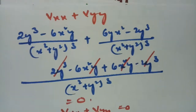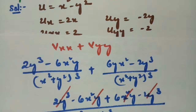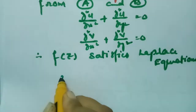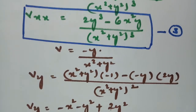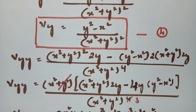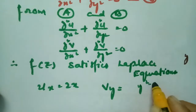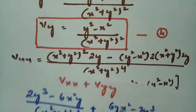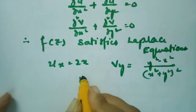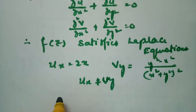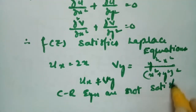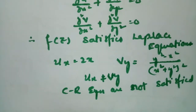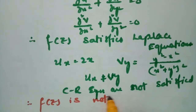Now we have to show that f(z) is not a regular function. For that, we check CR equations: ux should equal vy and uy should equal -vx. ux = 2x. But vy = (y² - x²) / (x² + y²)². Since ux ≠ vy, CR equations are not satisfied. Therefore, f(z) is not a regular function.